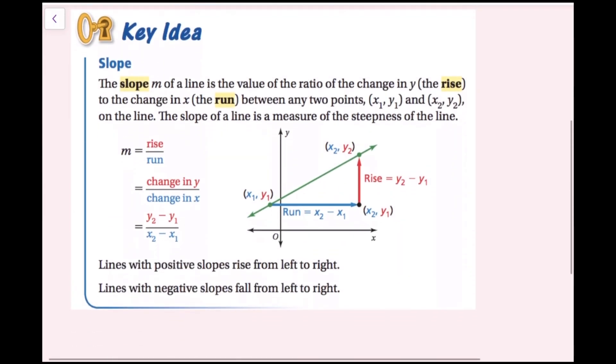The key idea of slope: the slope, m, of a line is the value of the ratio of the change in y — which is the rise — to the change in x — which is the run — between two points, which we can call x1, y1 and x2, y2 on the line. The slope of a line is a measure of the steepness of the line.